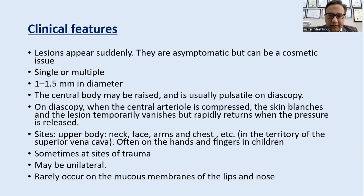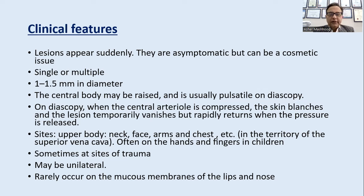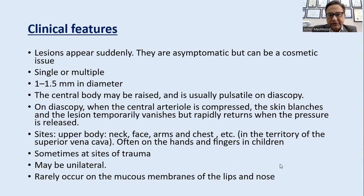Clinical features: the lesion appears suddenly and is asymptomatic but can be a cosmetic issue. Lesions are usually 1 to 1.5 mm in diameter. The central body is raised and pulsatile on diascopy; the central arteriole is compressed, the skin bleaches and the telangiectasia temporarily vanishes, returning once pressure is relieved. Sites are usually the upper body — neck, face, arm and chest — in the territory of the superior vena cava, and often on hands and fingers in children.